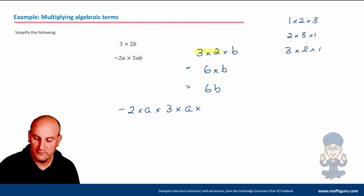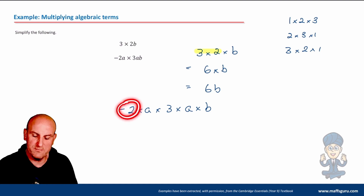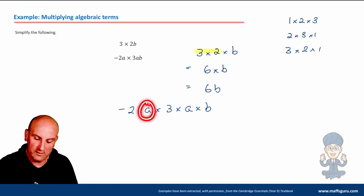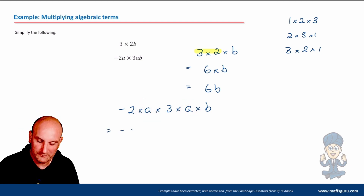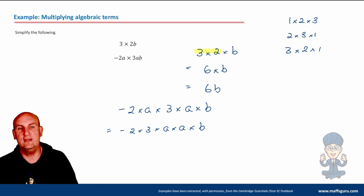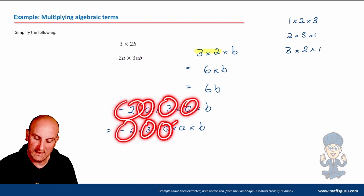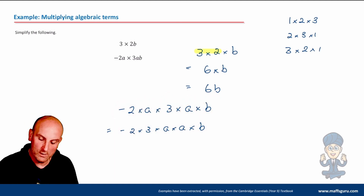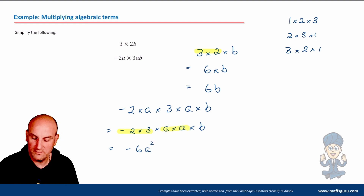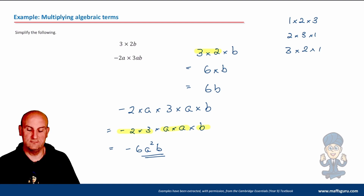Next: minus 2a times 3ab. I've got minus 2, a, 3, a, and b. I reorder to put the numbers together and the letters together: (−2) × 3 × a × a × b. That gives: −2 × 3 = −6, a × a = a², and the lonely b stays as b. So minus 2a × 3ab = −6a²b.